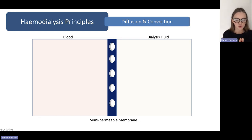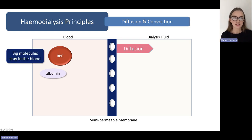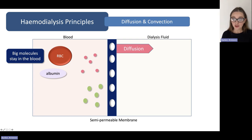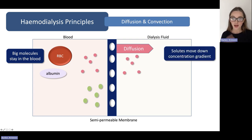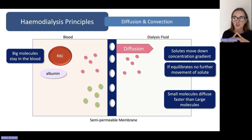So the dialysis principles are diffusion and convection. Diffusion is the movement of molecules across the semi-permeable membrane from a high concentration to a low concentration. These cells and albumin are going to stay behind in the bloodstream — they are not going to move across. Small molecules like urea and bigger molecules are going to move across along their concentration gradient from high to low, until the concentrations on both sides are equal, until they equilibrate. Then no more solute will move. And an important concept is that small molecules are going to do this much faster than large molecules — small molecules will just fit through the pores super easily.